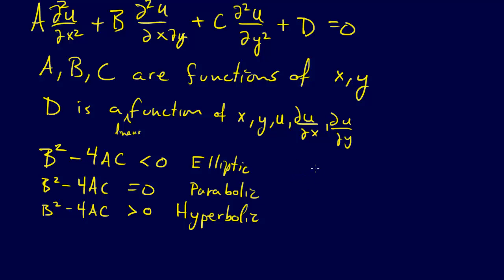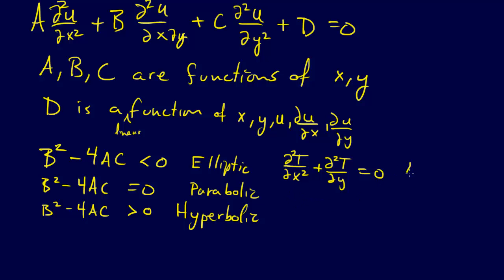Let's provide an example of each. The classic example of an elliptic PDE is the second partial of T with respect to X, plus the second partial of T with respect to Y, equals zero. This is Laplace's equation. If there were a non-zero function of X and Y on the right side — that would be a non-zero D term — then it would be Poisson's equation.